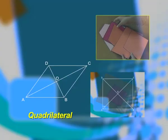Mathematics can be learned through hands-on activities. Dear students, you must have studied about various geometrical shapes in your classroom. Do you know what is a quadrilateral? A quadrilateral is a closed figure formed by four line segments.